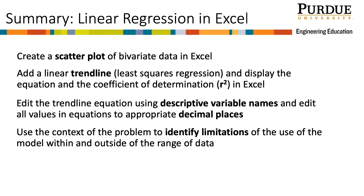In summary, this module provided examples of using Excel for linear regression. We created a scatterplot of bivariate data. We added the trendline to the plot, noting that the trendline in Excel is calculated using least squares regression, and displayed the trendline and coefficient of determination equations on our plot. We edited the trendline to have descriptive variable names and made all values of our equations display an appropriate number of decimal places. And finally, we used the context of the problem to determine the limitations of when it was appropriate to use our model.